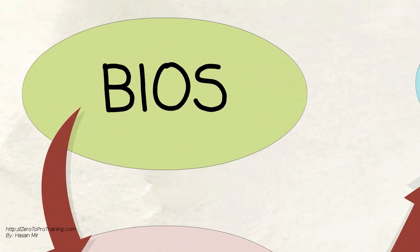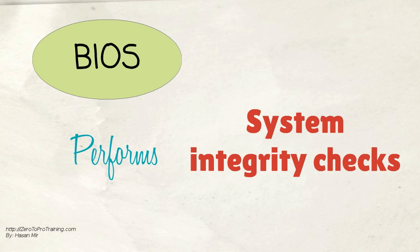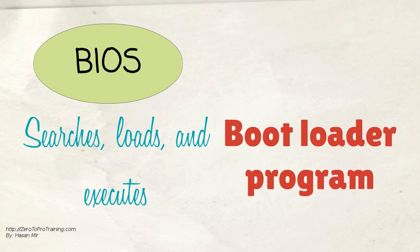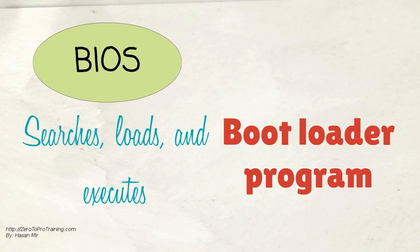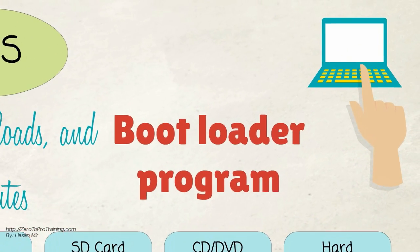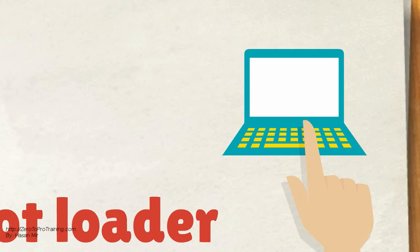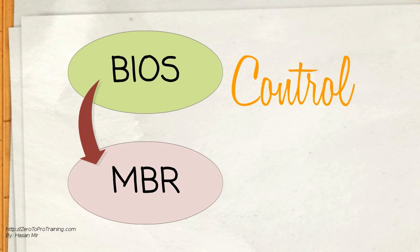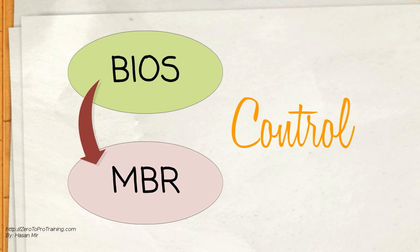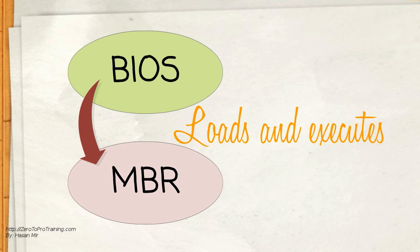Let's talk about BIOS. BIOS stands for Basic Input Output System. It performs system integrity checks, and searches, loads, and executes the bootloader program. It searches for the bootloader in disk drives, SD card reader, CD-ROM, DVD-ROM, or hard drive. You can press a key during BIOS start to change the boot sequence — typically F12 or F2, depending on the system. The BIOS gives control to the bootloader program once it is detected and loaded into memory. In short, BIOS loads and executes the MBR bootloader.